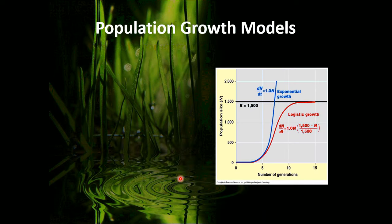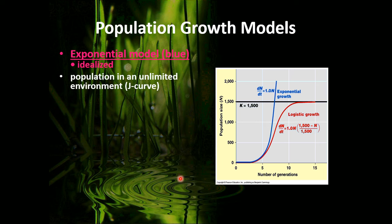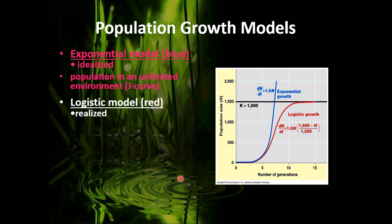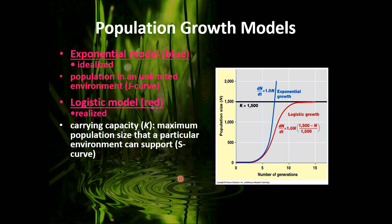We look at population growth in two different models. Exponential growth is the ideal way for organisms to grow, but it occurs only when they have unlimited resources, which is not very frequent. More often, we see a logistic model — what really happens — where a population reaches its carrying capacity, represented by the letter K. This is the maximum number of individuals that can be supported in an ecosystem based on available resources. Sometimes organisms will grow exponentially, then overshoot, and come back down to level off at their carrying capacity.